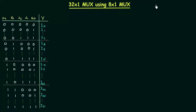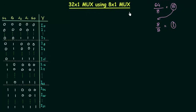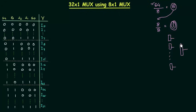If we have a 64x1 MUX, we divide 64 by 8 and get 8, then divide 8 by 8 and get 1. So we have 8 and 1 after the division, which shows we require 9 8x1 MUXes to obtain a 64x1 MUX, and it is pretty straightforward. In the first line we have 8 8x1 MUXes, and their outputs go to the inputs of the last 8x1 MUX, whose output acts as the output of the 64x1 MUX.